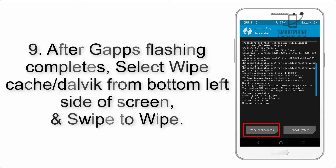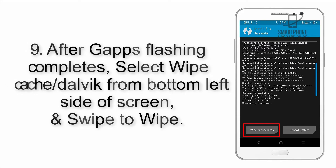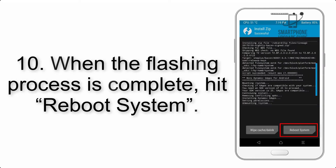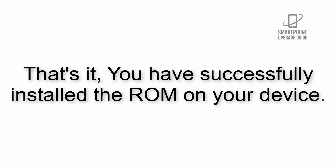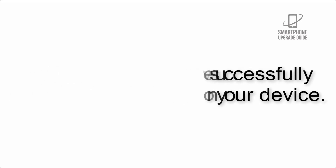Step 8: Flash the GApps zip package in the same manner. Step 9: After GApps flashing completes, select Wipe Cache and Dalvik from the bottom left side of the screen and swipe to wipe. Step 10: When the flashing process is complete, hit Reboot System. That's it — you have successfully installed the ROM on your device.